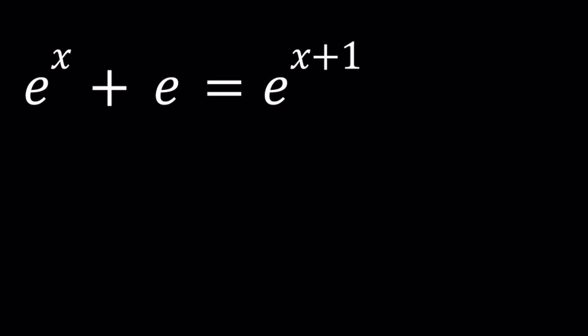First of all, e to the power x plus 1, even though we can't add the exponents in addition, we can do that in multiplication. If you have a to the m times a to the n, it can be written as a to the power m plus n. And vice versa, if you have those exponents being added, you can break it down, you can split it up.